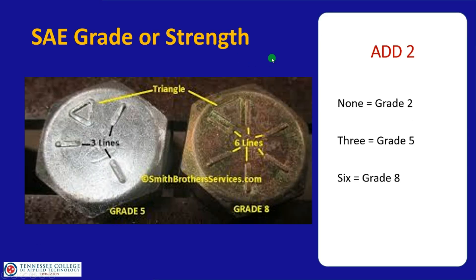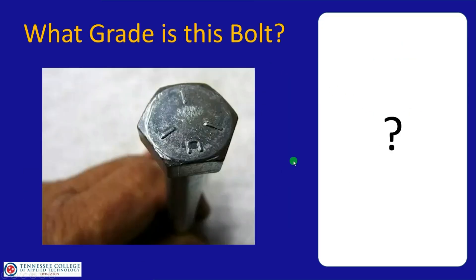Here are more examples: a grade 5 has 3 lines, a grade 8 has 6 lines — add 2 to each to get the grade. If there are no markings on the bolt, not all manufacturers are required to put them on, and some have their own specific markings. If there's nothing, you really don't know, though there's a good chance it's grade 2 or less. Practice: a bolt with 3 marks is grade 5.